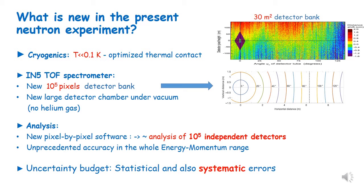A legitimate question is what is new in the present neutron experiment? First of all, cryogenics is done at extremely low temperatures. The temperature is well below 0.1 Kelvin, and the cell ensures good thermal contact. Second, and this is the major advance, the IN5 time-of-flight spectrometer has a new highly pixelized detector bank, covering 30 square meters with 10 to the 5 pixels. There is also a new large detector chamber under vacuum, no helium gas, which would spoil the resolution at low energies.